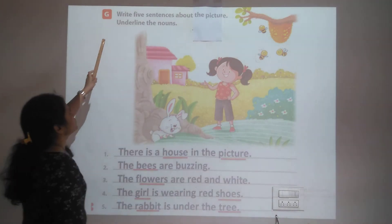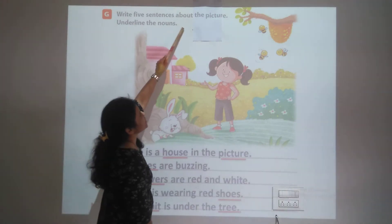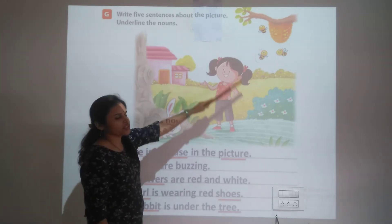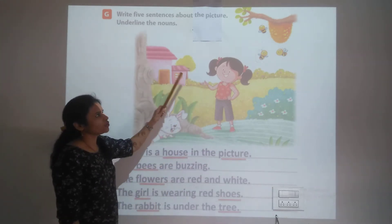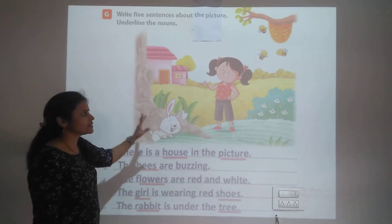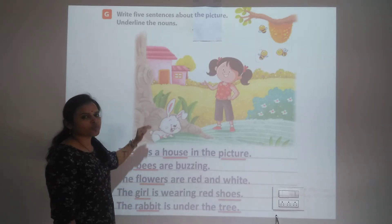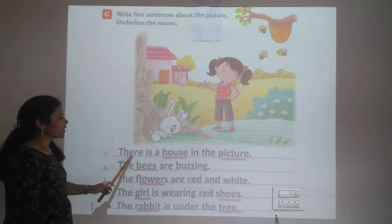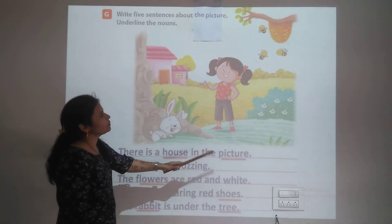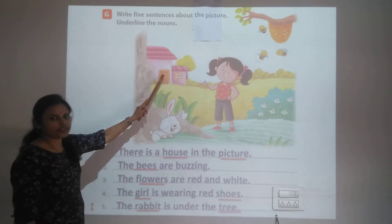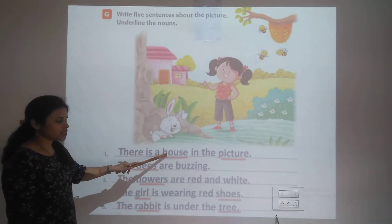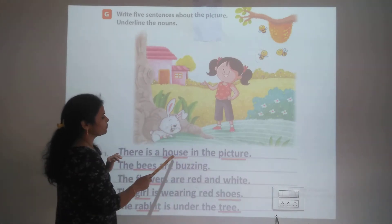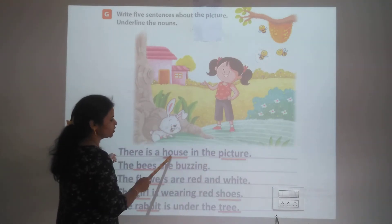Question G: Write five sentences about the picture and underline the nouns. We have written the first sentence: There is a house in the picture. Here 'house' is a noun, and 'picture' is also a noun — underline both.